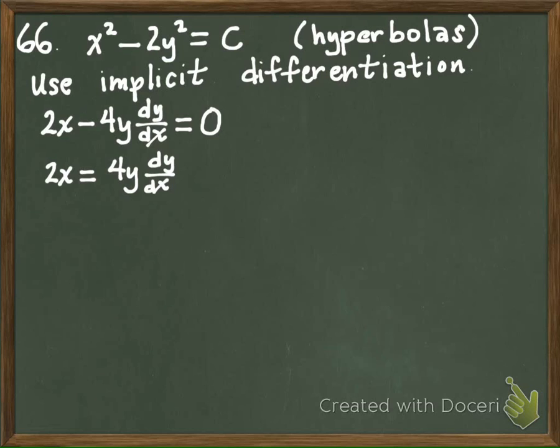And I'm going to want my x's on one side and my y's on the other side. Oh wait, no, no, no. Sorry. I want to solve for dy dx first. So to get dy dx by itself, we're just going to divide out this 4y. So we get x over 2y is equal to dy dx.